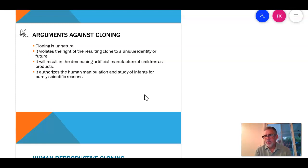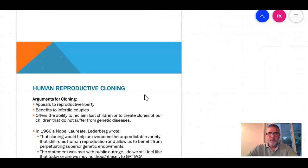It authorizes human manipulations and study of infants for clearly scientific reasons. Remember, the Nuremberg and Helsinki reports say that we can't use people as study subjects. We have to have an intention. But if they're clones, are they still people? So that would be the argument. There was an argument years ago about growing clones is we could just grow them for organs. Or if you had a child with a genetic disease, you could clone your child with a genetic disease and maybe fix the genes. Then you would have a healthy version.